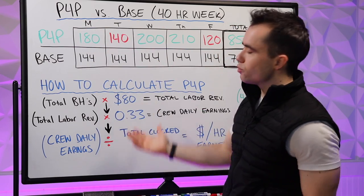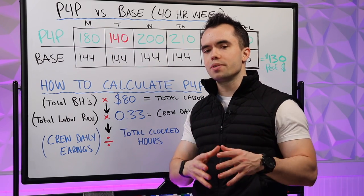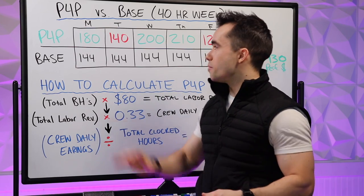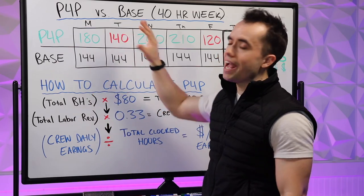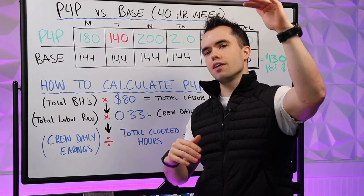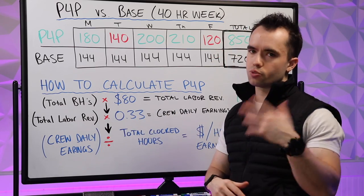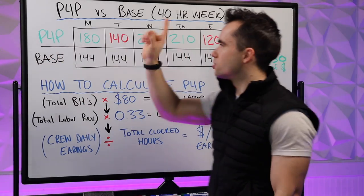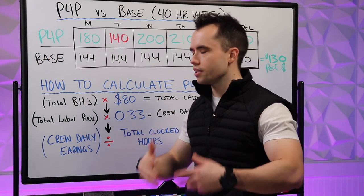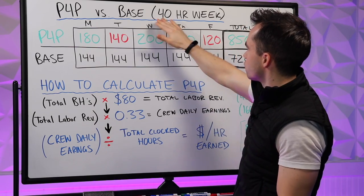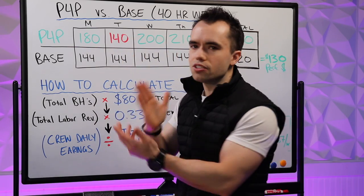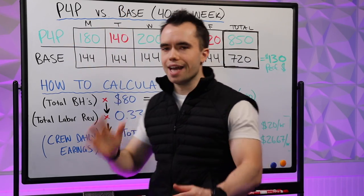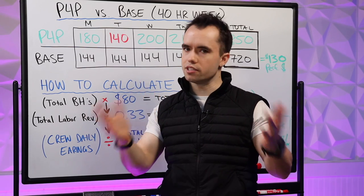This is exactly what we show our team out on the front lines. Inside P4Psoftware.com/training there's a free course and tutorials about exactly how to calculate all of this. But let me do a higher-level overview for this demo. On this given week — assuming the pay period is just one week long — what's going to happen every single day is you're going to calculate P4P and base pay. P4P is simply a percentage of the labor revenue that is generated by the crew.